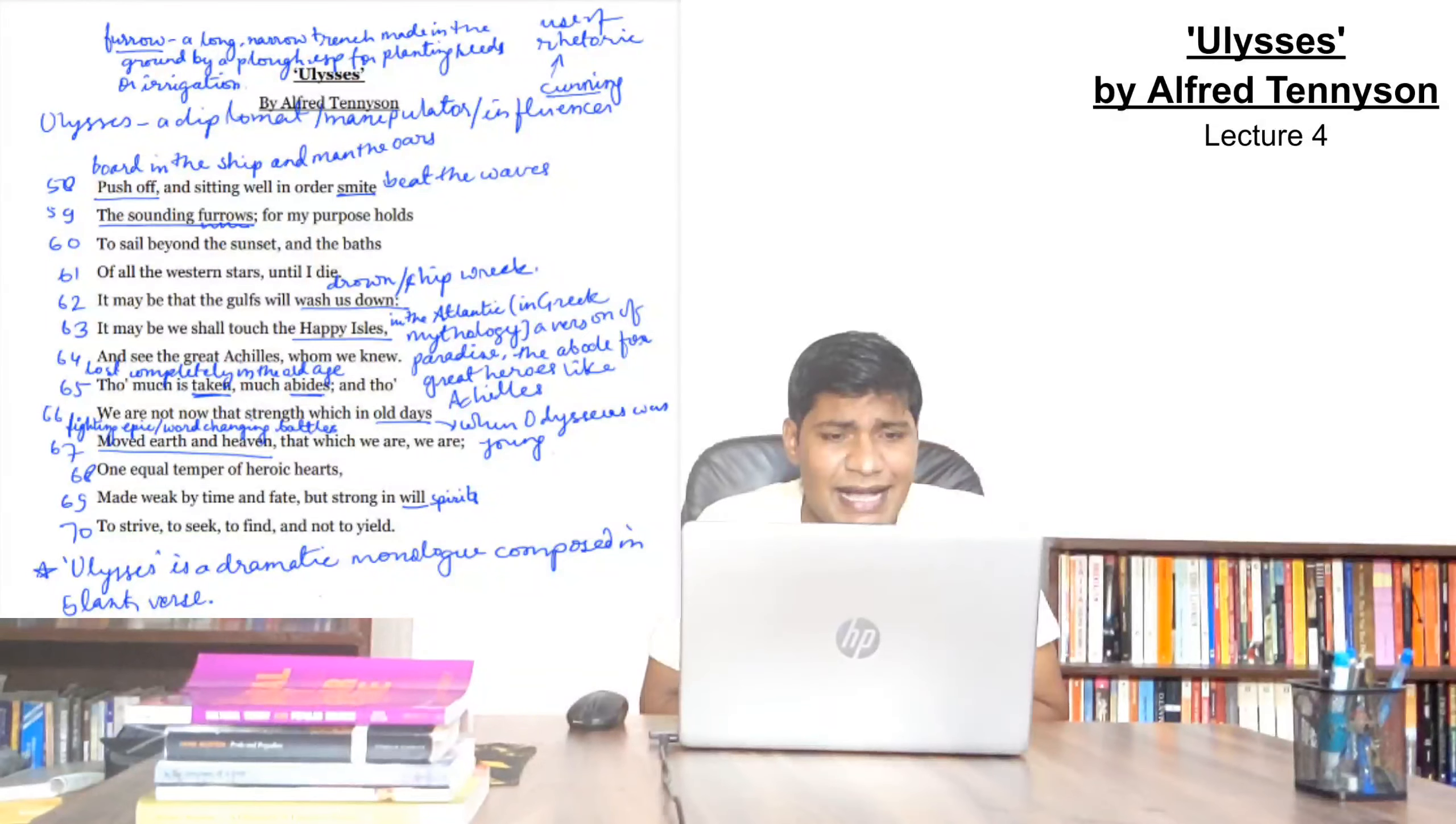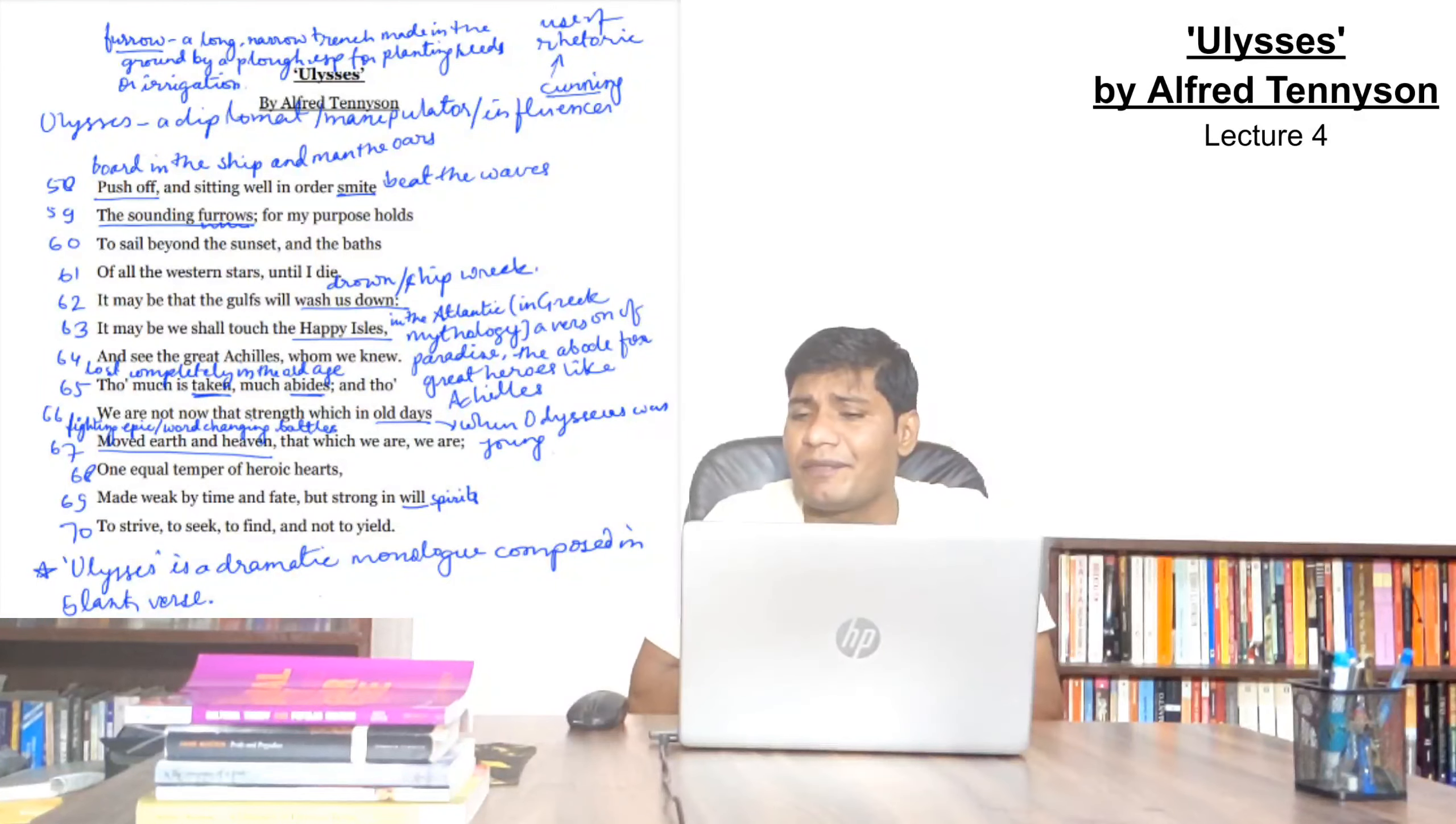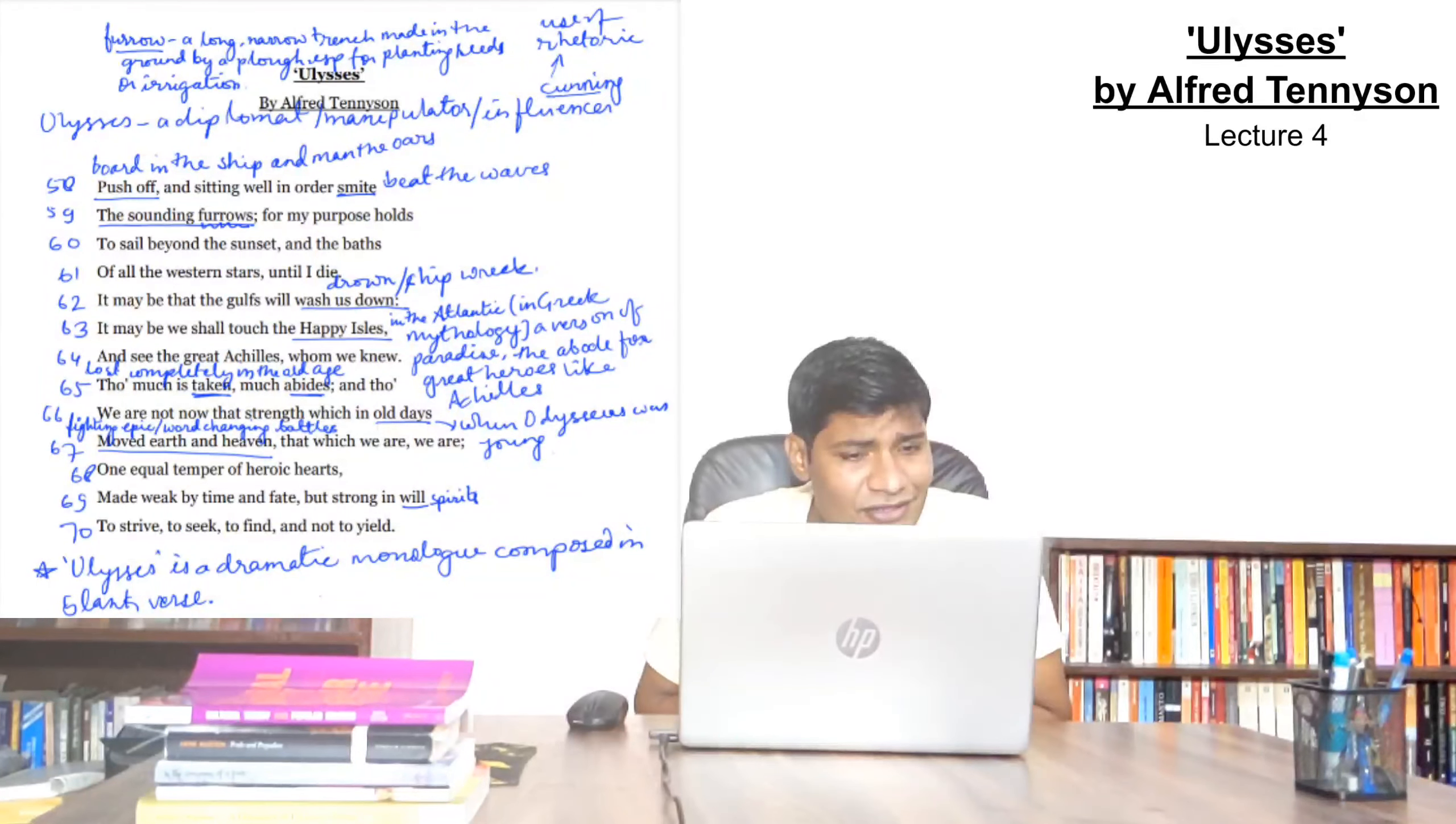Ulysses is trying to do one thing that he is proposing all his fellow companions to come and join him into the next travel. And that travel is not of again hierarchical nature. It is more democratic because he appreciates all his friends, all his colleagues, all his peers. You have read that section in the previous lecture. Now what he says? A push off, sitting well in order smite the sounding furrows. Now his sail is going to start, push off.